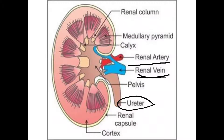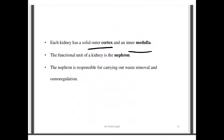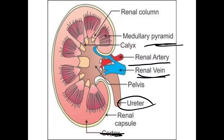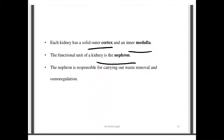Each kidney has a solid outer cortex and an inner medulla region. The functional unit of the kidney is the nephron. The nephron is responsible for carrying out waste removal and osmoregulation. This is very important — the working unit of the kidney is the nephron.